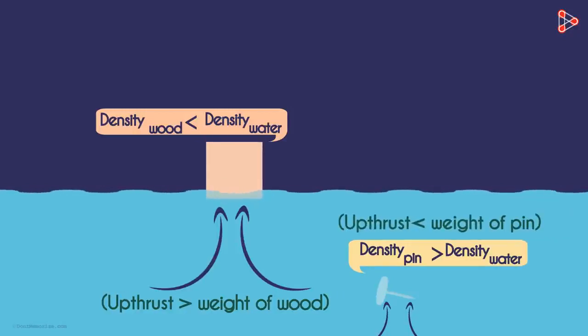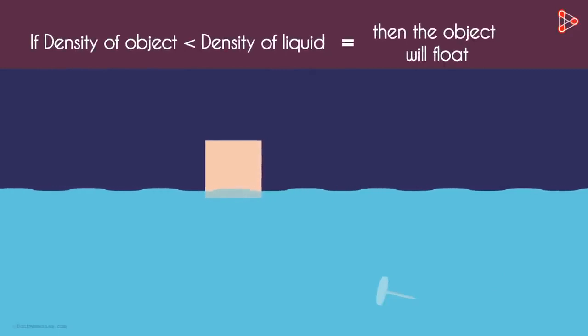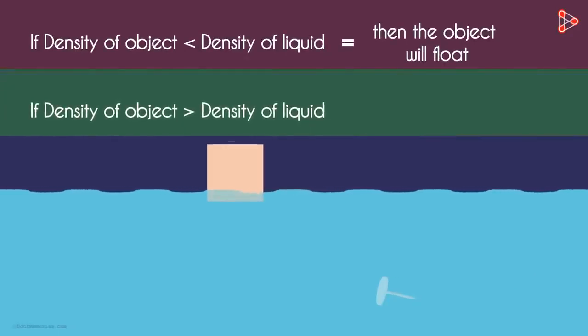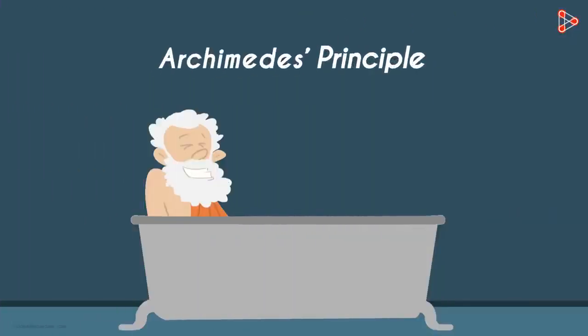So what can we conclude? If the density of an object is lesser than the density of the liquid, then it will float. And if the density of an object is more than the density of the liquid, then it will sink. We'll understand the Archimedes principle in the next video.